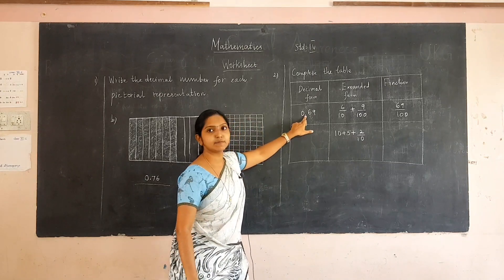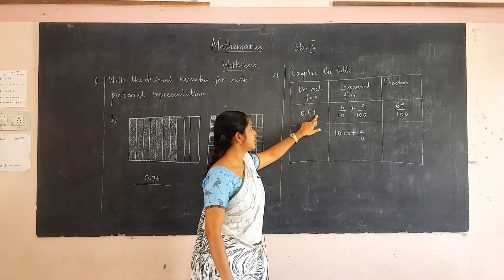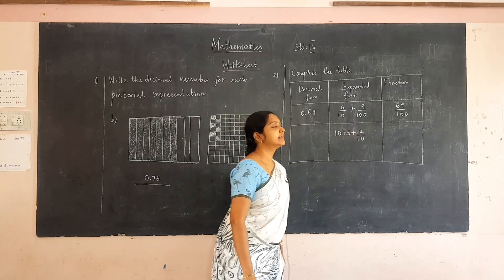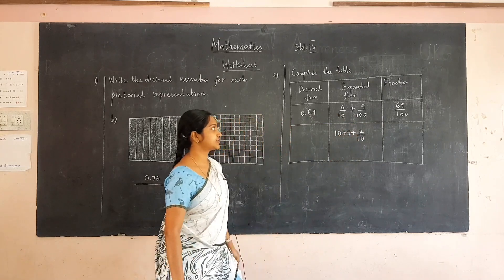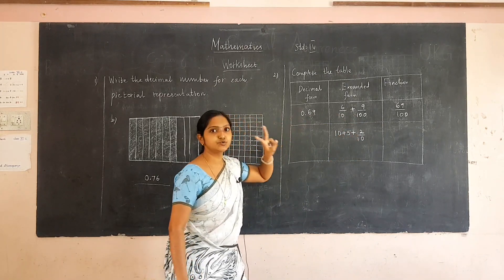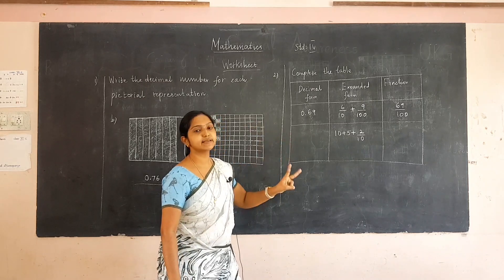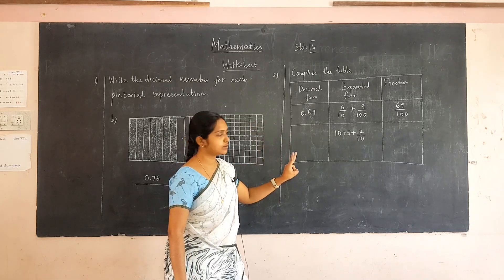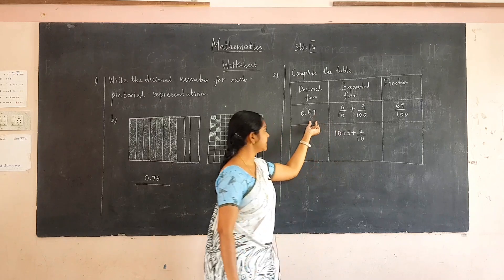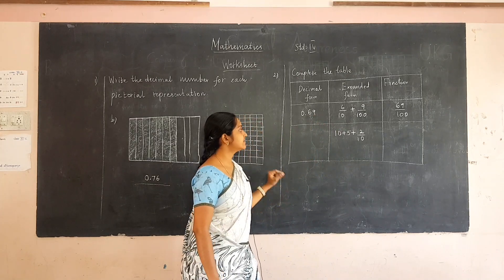After the decimal point we are having two places, so we have to divide sixty-nine by hundred — that is the fraction. Two places means two zeros, so we have to divide sixty-nine by hundred. That is the fraction.